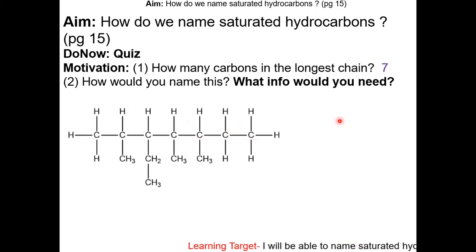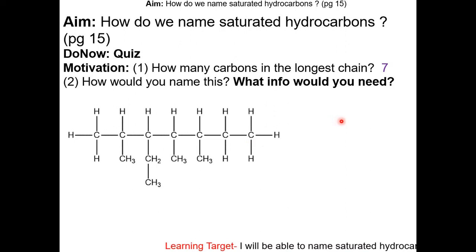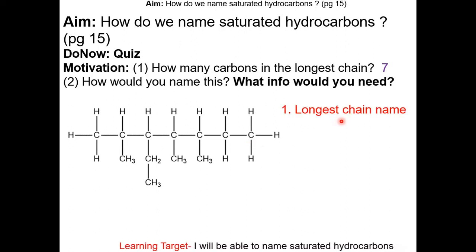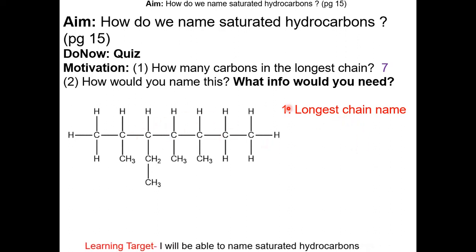Since there are 7 carbons in the longest chain, by using table P, the name of the longest chain will be heptane, since these are all single bonds.